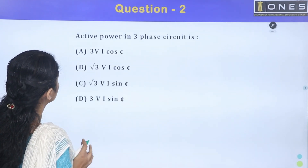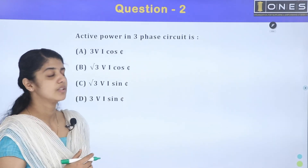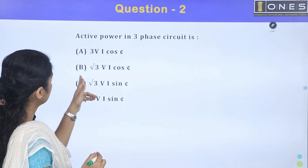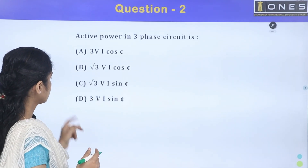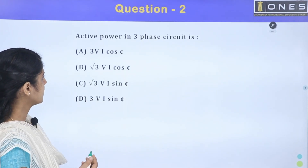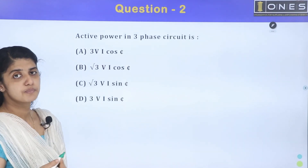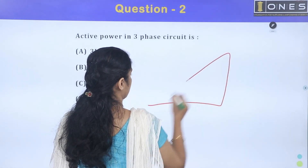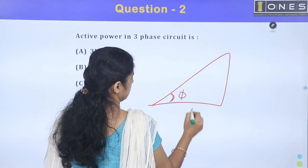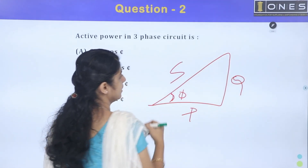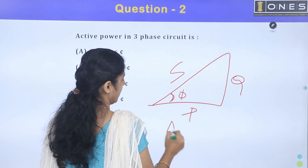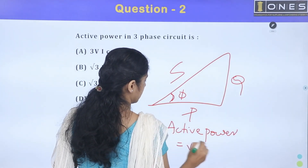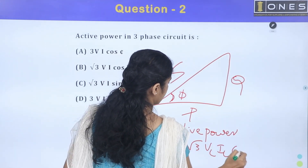Question 2: Active power in a three-phase circuit. Options are 3VI cos φ, root 3 VI cos φ, root 3 VI sin φ, 3VI sin φ. We have three types of power in the power triangle: active power, reactive power, and apparent power. Active power is root 3 VL IL cos φ.